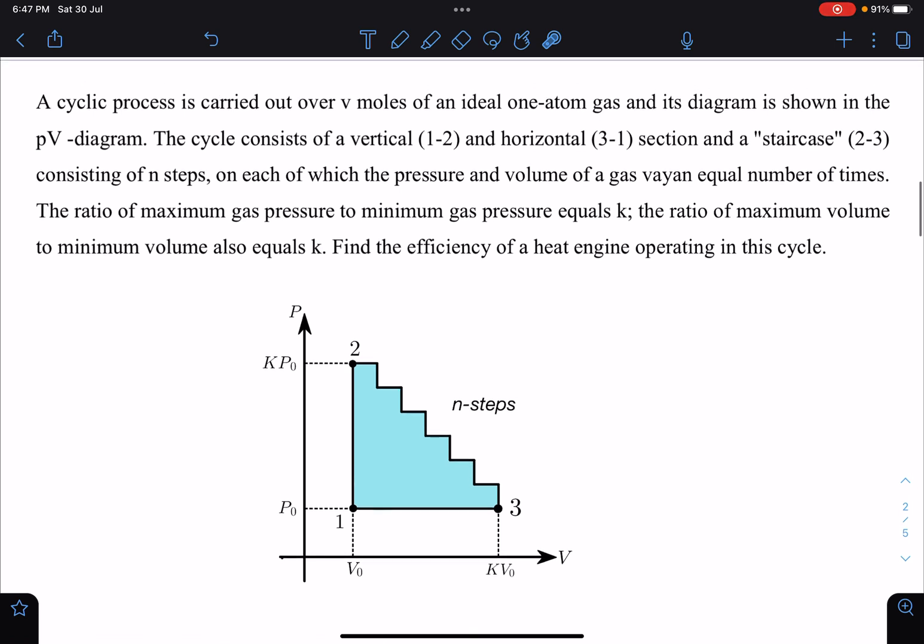Here is the problem statement. A cyclic process is carried over ν moles of an ideal one-atom monatomic gas and its diagram is shown in the PV diagram. The cycle consists of a vertical (1-2) and horizontal (3-1) section. The cycle orientation is also given, so don't get confused—it's a clockwise cycle.